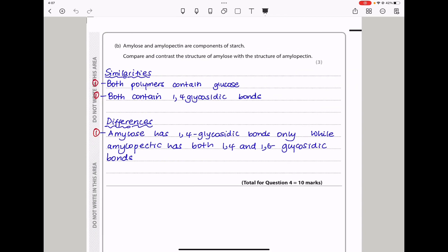Part B says amylose and amylopectin are components of starch. Compare and contrast the structure of amylose with the structure of amylopectin. When they say compare and contrast, they want you to talk about the similarities as well as the differences. The similarities are both of them are polymers that contain glucose molecules, and both contain 1,4 glycosidic bonds. The differences are amylose has 1,4 glycosidic bonds only, while amylopectin has both 1,4 and 1,6 glycosidic bonds.